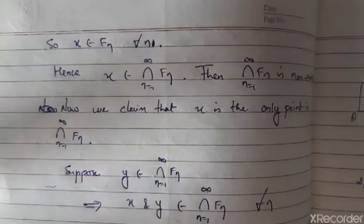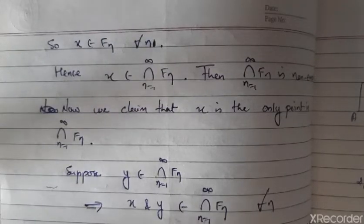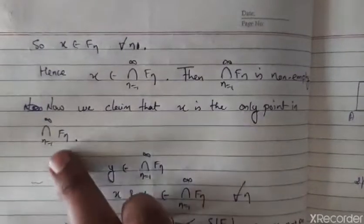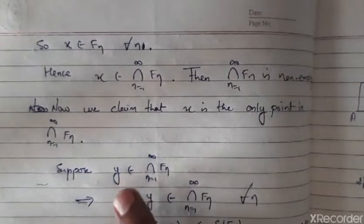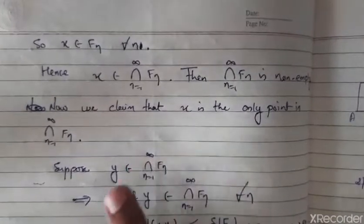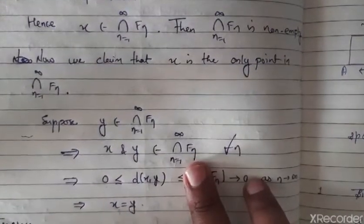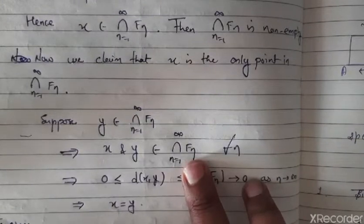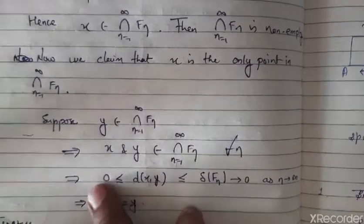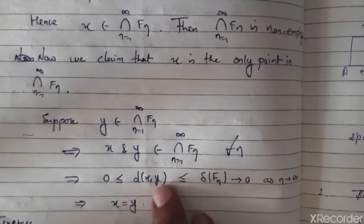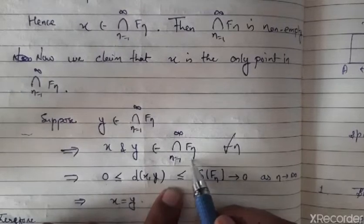Now our claim is that the infinite intersection contains exactly one point. We claim that x is the only point in the intersection of Fn. Suppose y is also in the intersection of Fn. Then both x and y lie in every Fn, so zero is less than or equal to d(x, y), which is less than or equal to the diameter of the intersection of Fn.